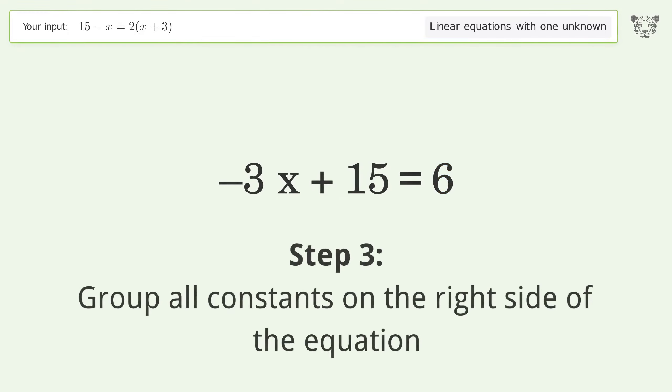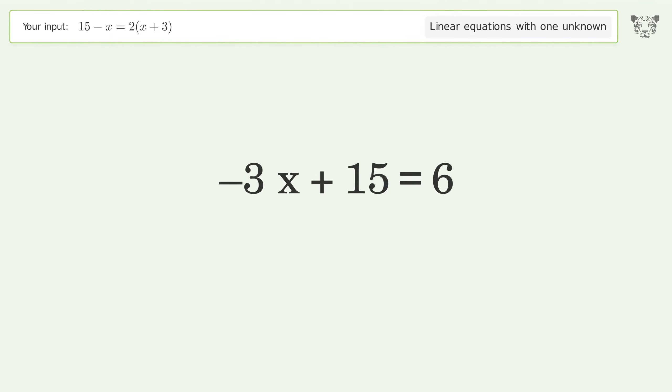Group all constants on the right side of the equation. Subtract 15 from both sides. Simplify the arithmetic.